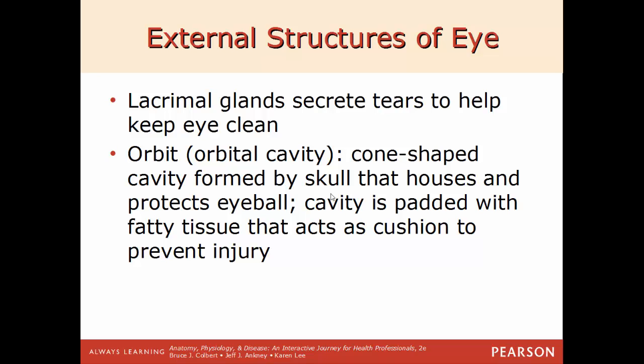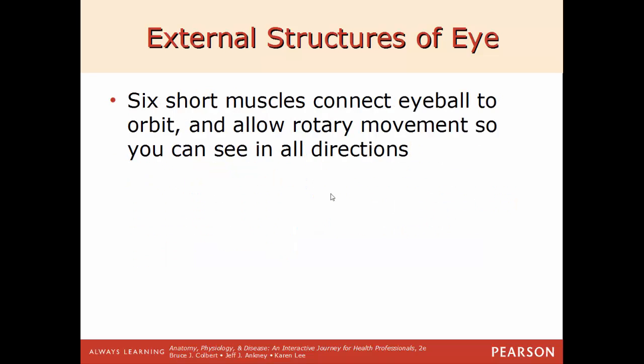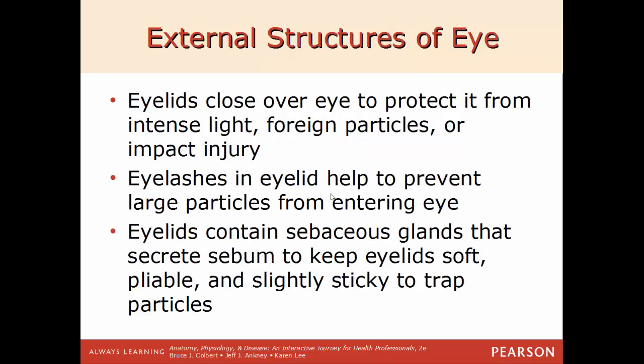The external structures of the eye: the lacrimal glands help secrete tears to keep the eye clean. The orbit or orbital cavity is the cone-shaped cavity in the skull that houses the eyeball, padded with fatty tissue to prevent injury. Six short muscles connect the eyeball to the orbit, allowing rotary movement so you can see in all directions. The eyelids close over the eye to protect it from intense light, foreign particles, or impact injury.